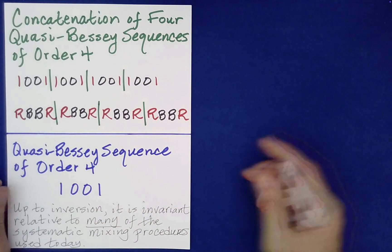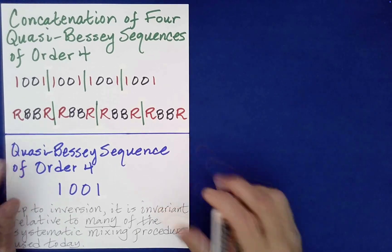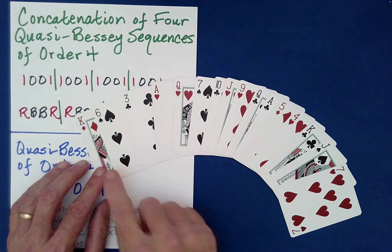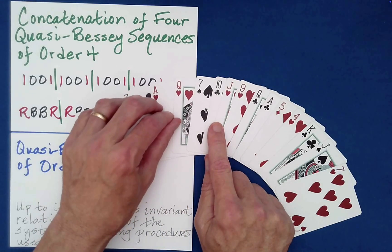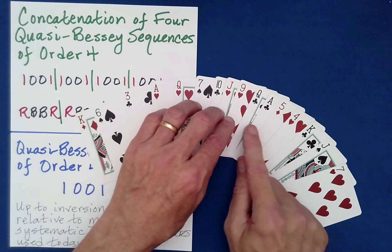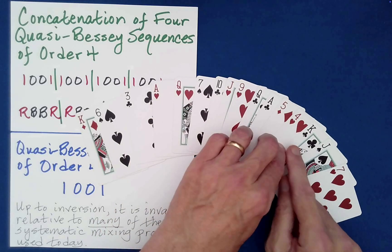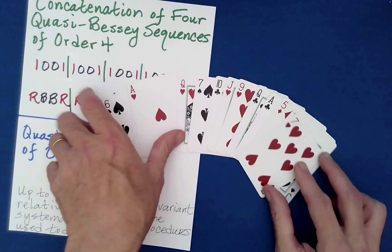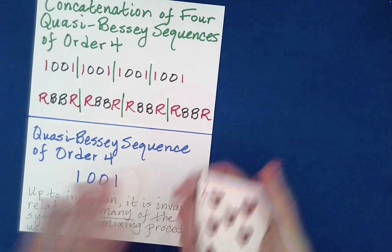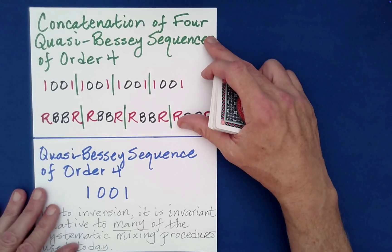This is an example of quasi-Bessey sequences of order four. In fact, it's the concatenation of four of these. I'll show you the packet structure. Essentially, we have red, black, black, red, and then that repeats three more times: red, black, black, red, red, black, black, red, red, black, black, red.